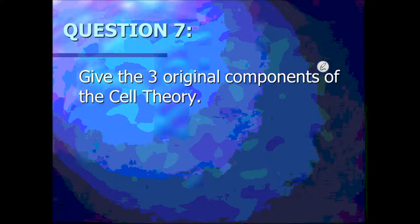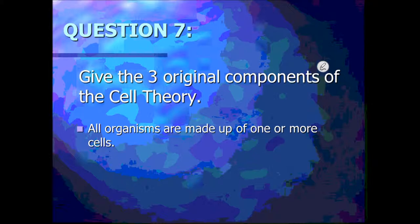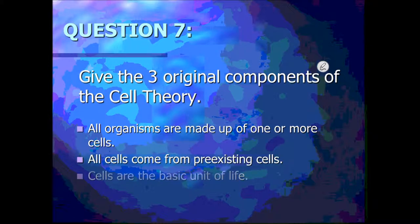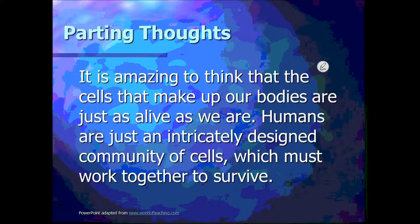Take a second to see if you can remember the three parts of the cell theory. First part: all organisms are made up of one or more cells. Second: all cells come from pre-existing cells. Third: cells are the basic unit of life. Finally, just some parting thoughts: it is amazing to think that the cells that make up our bodies are just as alive as we are, because they are the basic unit of life. Humans are just an intricately designed community of cells which must work together to survive.